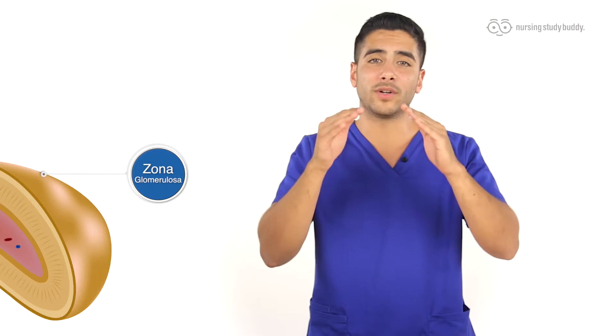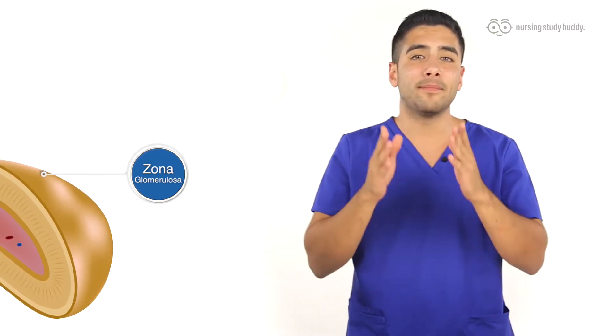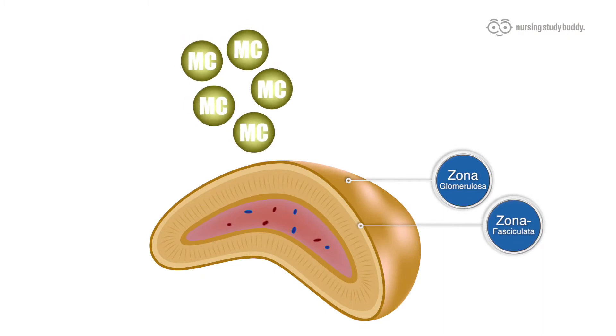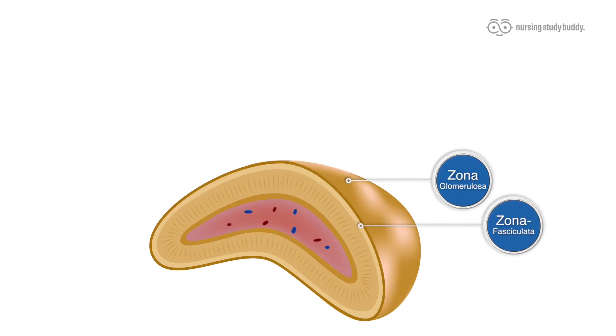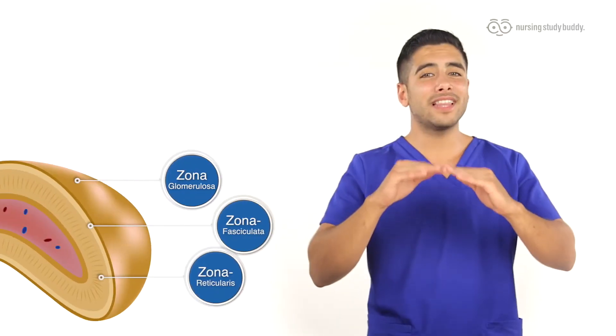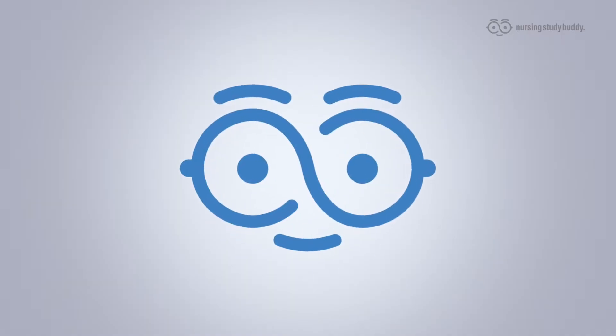The zona glomerulosa is the outer layer of the cortex and it makes mineralocorticoids. The zona fasciculata is the middle layer and it's responsible for making glucocorticoids. The zona reticularis is the innermost layer of the cortex and it makes androgens.